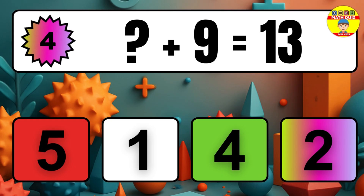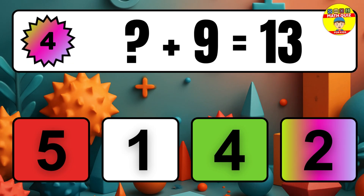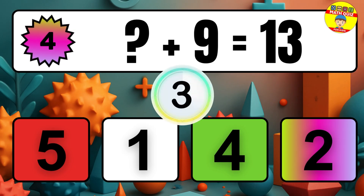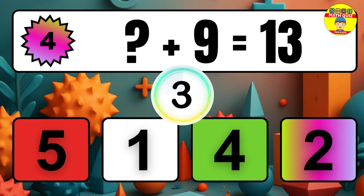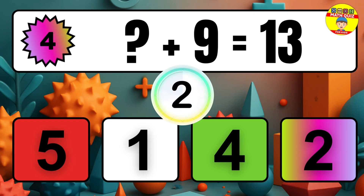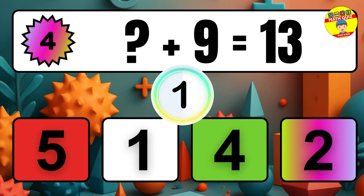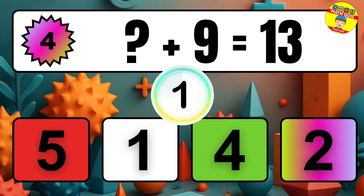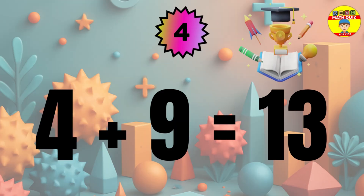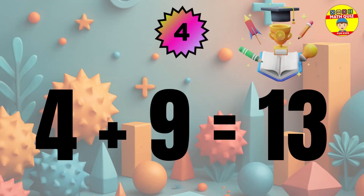Question 4. What number plus 9 equals 13? The missing number is 4.